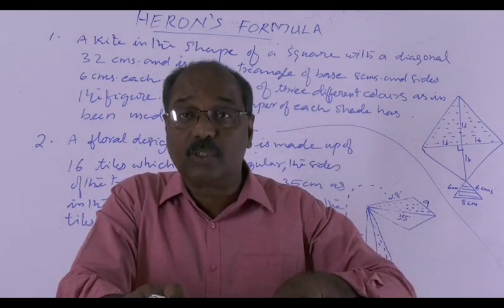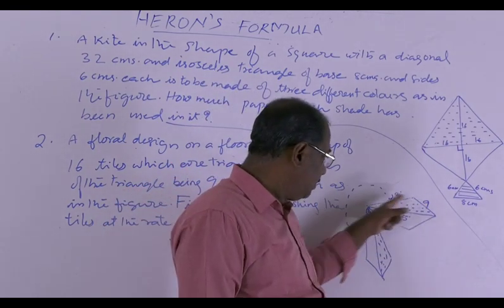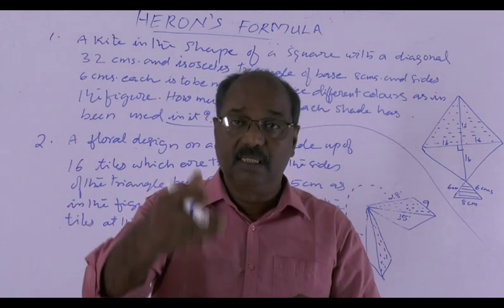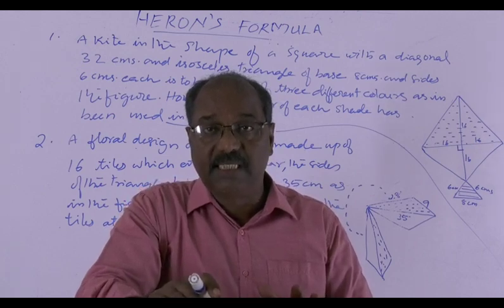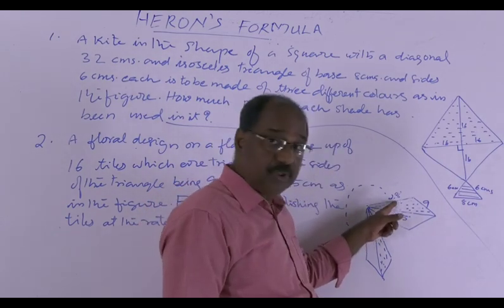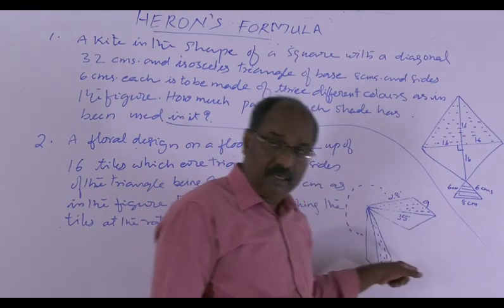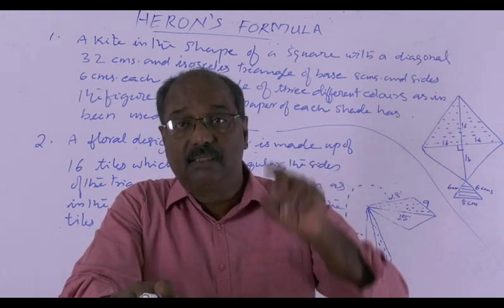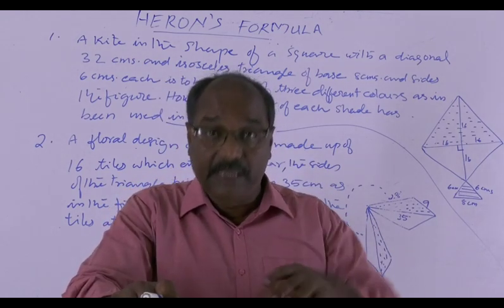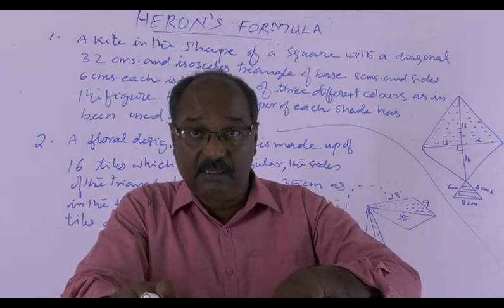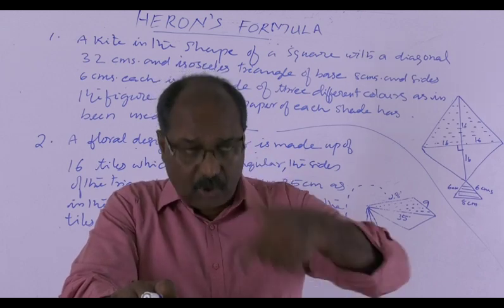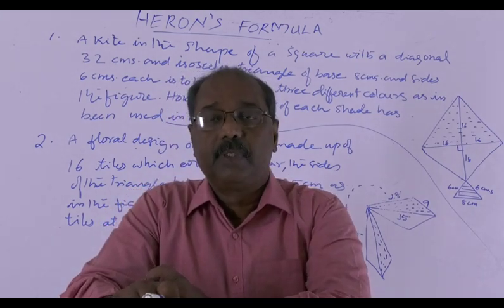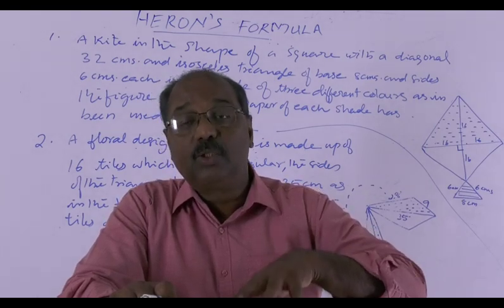Find the area using Heron's formula. S equals (35 + 9 + 28) divided by 2, which is 36. Then using the formula root of S(S−A)(S−B)(S−C), we get the area of one triangular portion. Then multiplying this area with 16, we get the total area of that design. That total area is in square centimetres. So for one square centimetre, 50 paise. So total area into 50 will give the cost of polishing in paise. If we divide this by 100, we will get the cost in rupees.